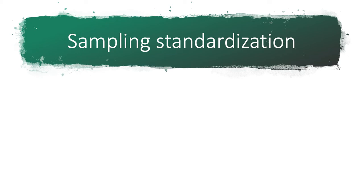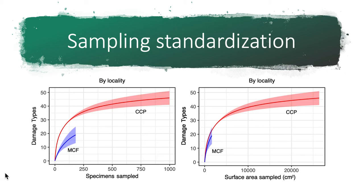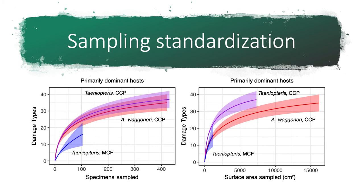Switching gears to the question of sampling standardization: if you have a number of localities with different numbers of leaves and different amounts of leaf surface area, how do you standardize to make robust comparisons of insect feeding? Using rarefaction curves — as we sample more plant specimens, how many more damage types do we see? — the results change dramatically when we scale by surface area rather than specimen count, because one locality may have much larger leaves than another. We need to scale our rarefaction curves by leaf surface area to make valid comparisons, and this holds true not just for entire fossil localities but also for individual fossilized plant taxa.